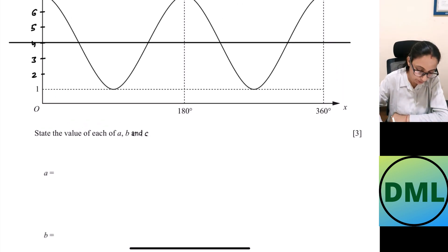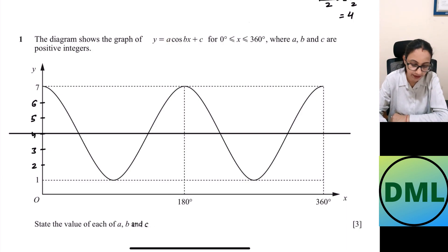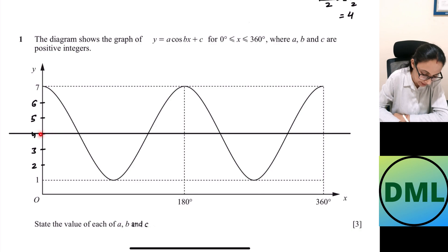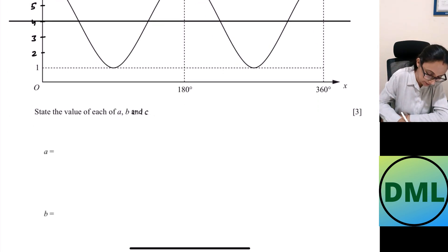I need to find out my amplitude — a. The value for a is found by seeing how many units it goes above the axis and below the axis. It goes 1, 2, 3 units above the axis and 1, 2, 3 units below the axis. That means the value for a is 3.